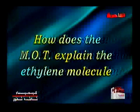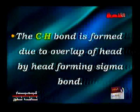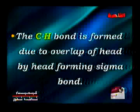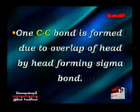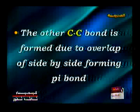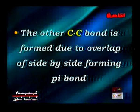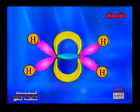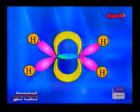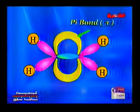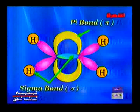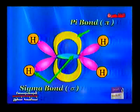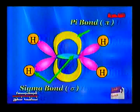How does the molecular orbital theory explain the acetylene molecule? The C-H bond is formed due to head-by-head overlap, forming a sigma bond. One C-C bond is formed due to head-by-head overlap, forming a sigma bond. The other C-C bonds are formed due to side-by-side overlap, forming pi bonds. As the screen shows, acetylene is formed with pi bonds between the two carbon atoms, and sigma bonds — one between carbon and carbon, and others between carbon and hydrogen.